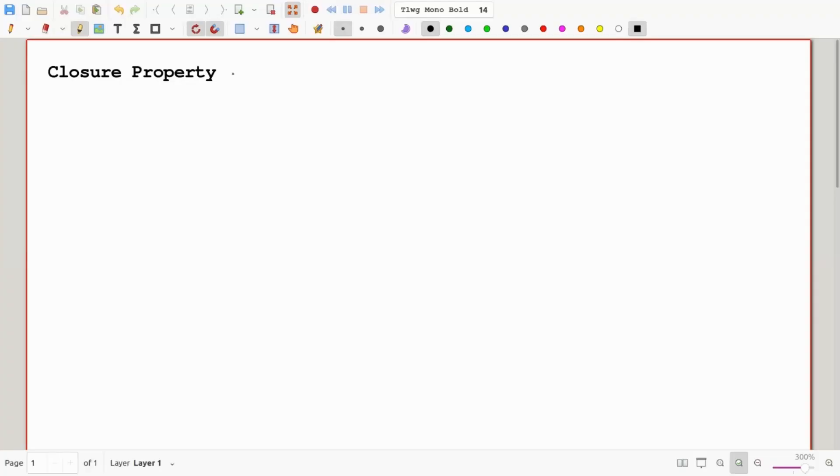So let's start with the closure property. The closure property says that if I let x and y be any real numbers, x and y are elements of R, that says they are any real numbers, then the set of real numbers is closed with respect to addition and multiplication. So x plus y and x times y both are always a real number. This is the property called the closure property.